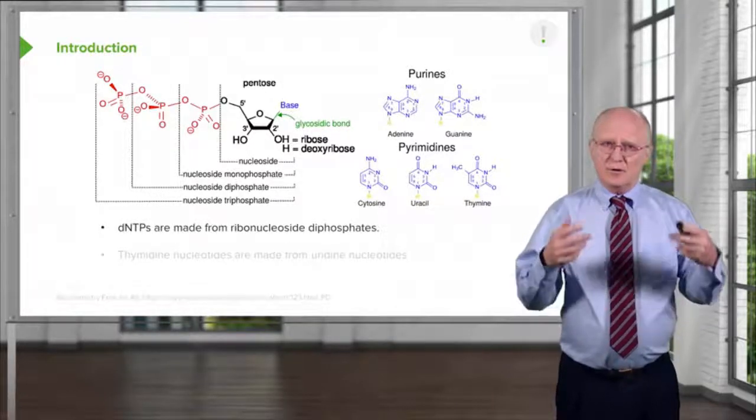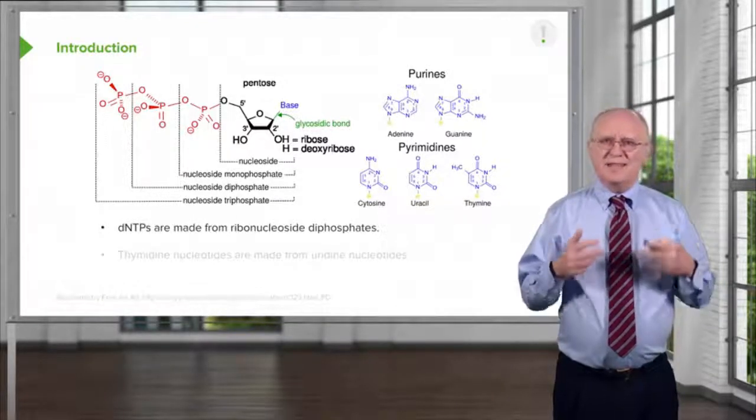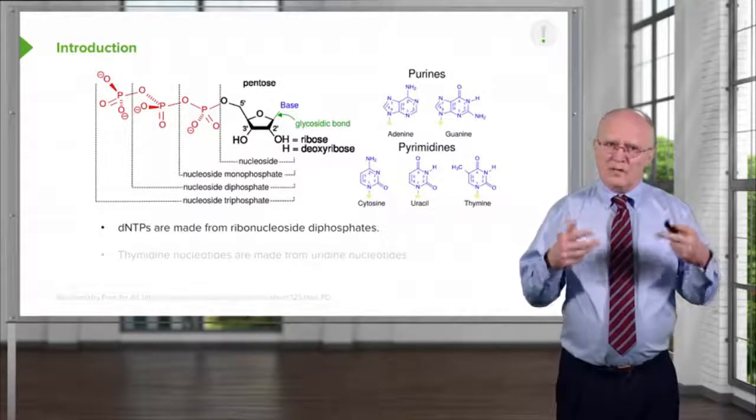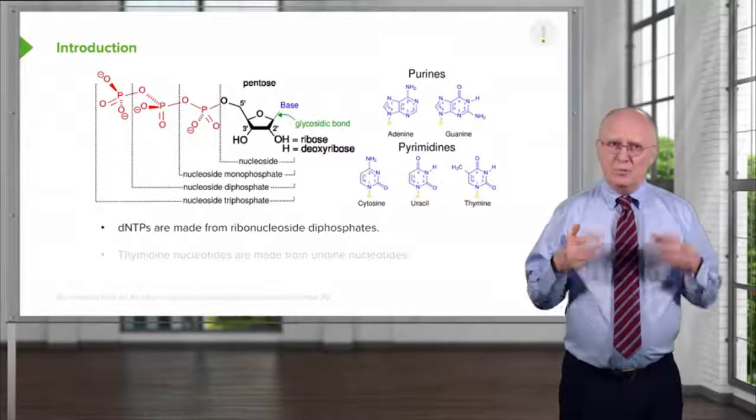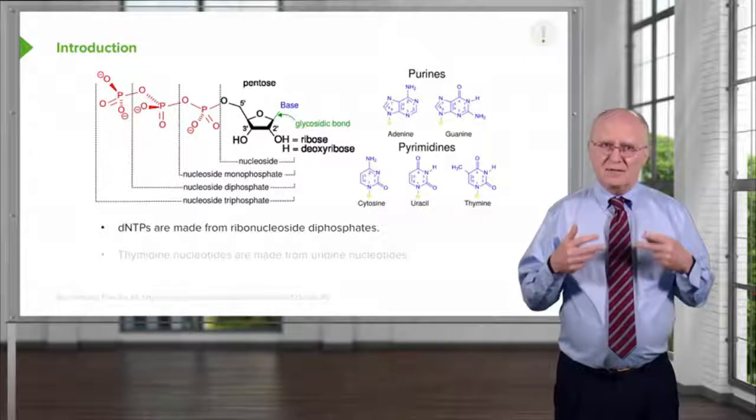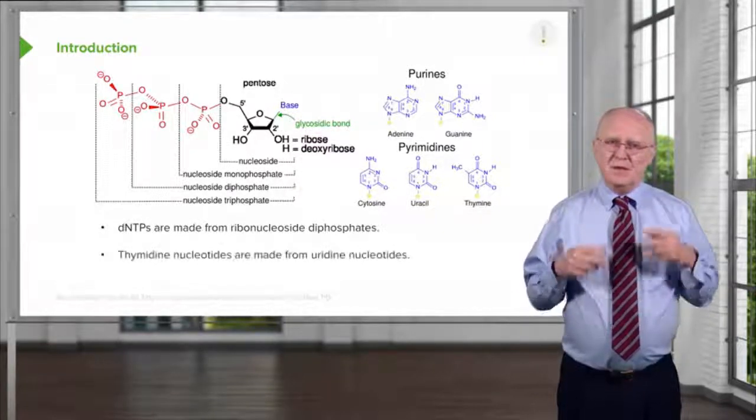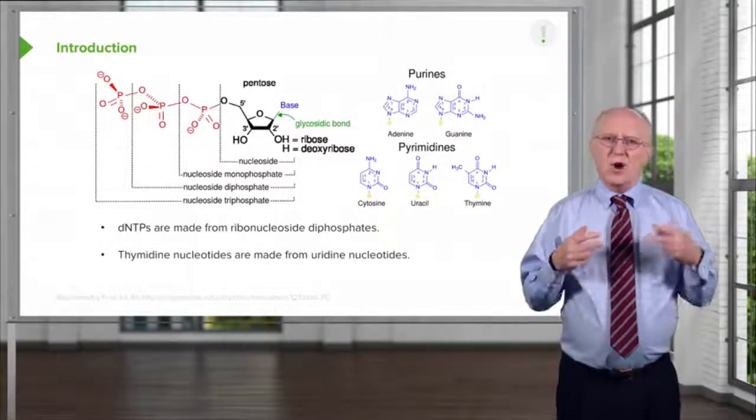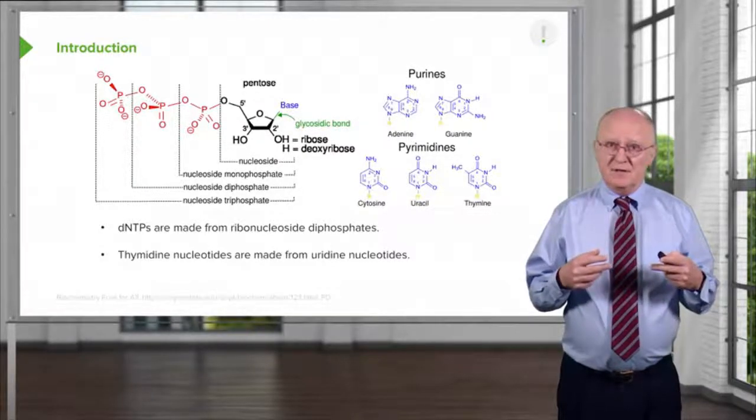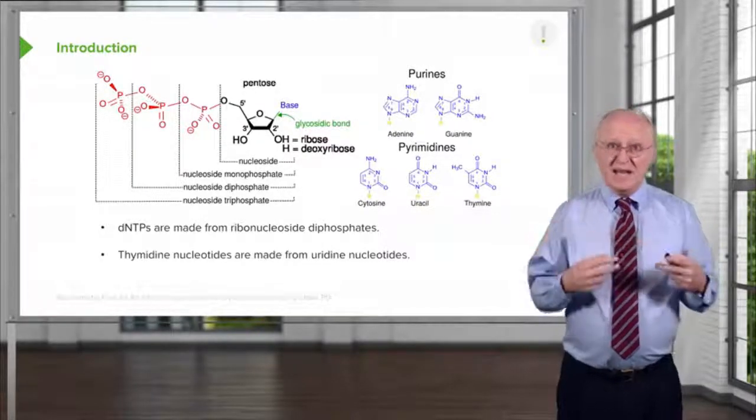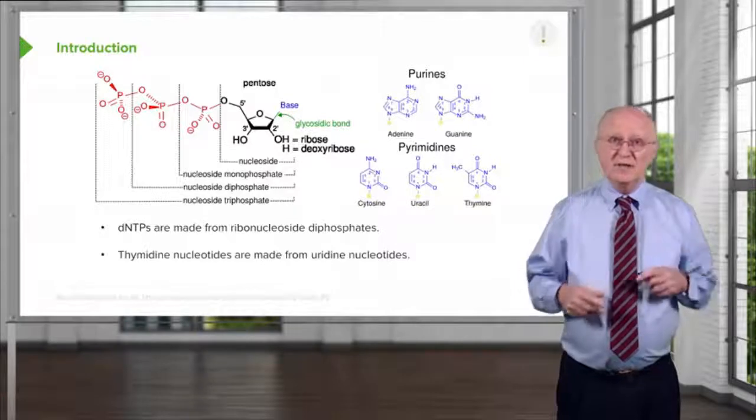The deoxyribonucleotides that are used to make DNA are made from ribonucleoside diphosphates. So in order to make dNTPs, we first need to make the ribonucleotide versions of those. Last, thymidine nucleotides are made from uridine nucleotides, as we will see. So in order to make thymine to put into DNA, we first got to make the uridine equivalent.